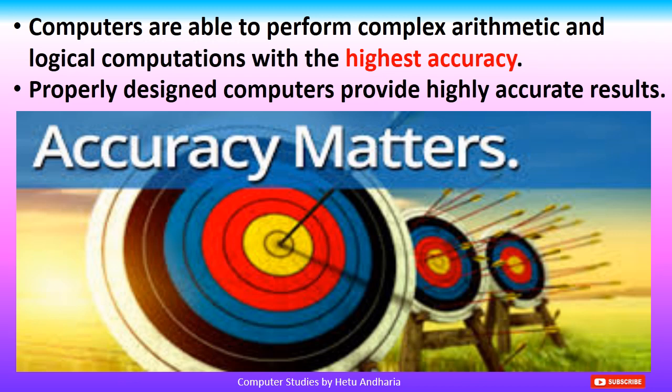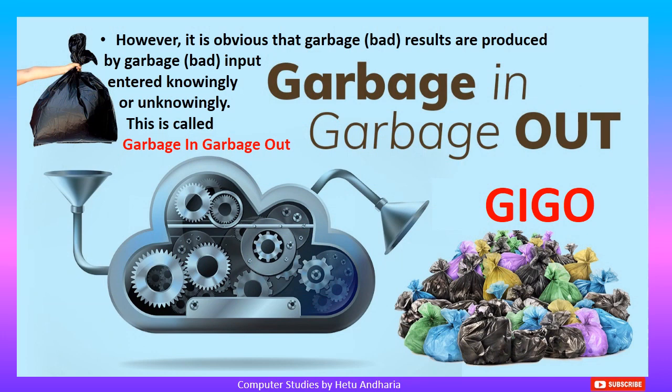If we compare computers to human beings, some humans are very smart and intelligent with sharp memory. But if asked to perform the same task repeatedly, they will start producing wrong results. For example, a top student who scores 100 out of 100 in maths can correctly do 10 sums of the same kind, but if given 10,000 sums, after some time he will start making mistakes. While a computer never makes any mistake. However, garbage in, garbage out — bad results or wrong output are produced by bad input entered knowingly or unknowingly. This concept is known as GIGO.